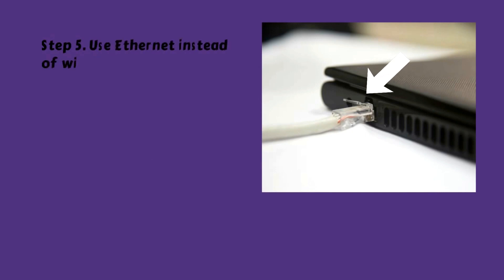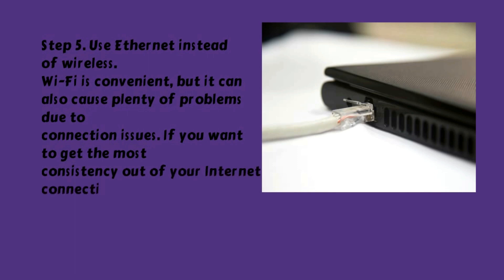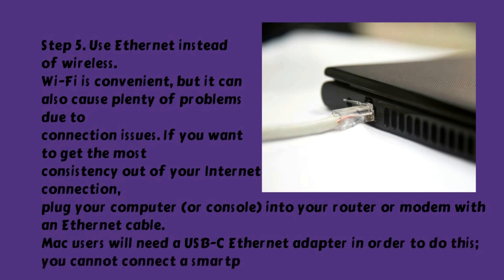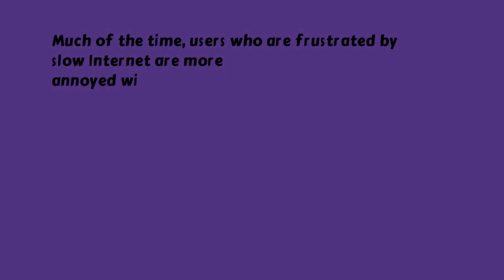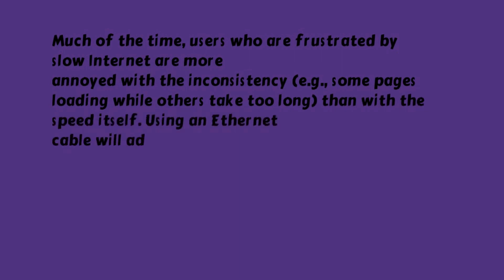Step 5: Use Ethernet instead of wireless. Wi-Fi is convenient, but it can also cause plenty of problems due to connection issues. If you want to get the most consistency out of your internet connection, plug your computer or console into your router or modem with an Ethernet cable. Mac users will need a USB-C Ethernet adapter in order to do this; you cannot connect a smartphone or tablet via Ethernet. Much of the time, users who are frustrated by slow internet are more annoyed with the inconsistency — e.g., some pages loading while others take too long — than with the speed itself. Using an Ethernet cable will address this problem.